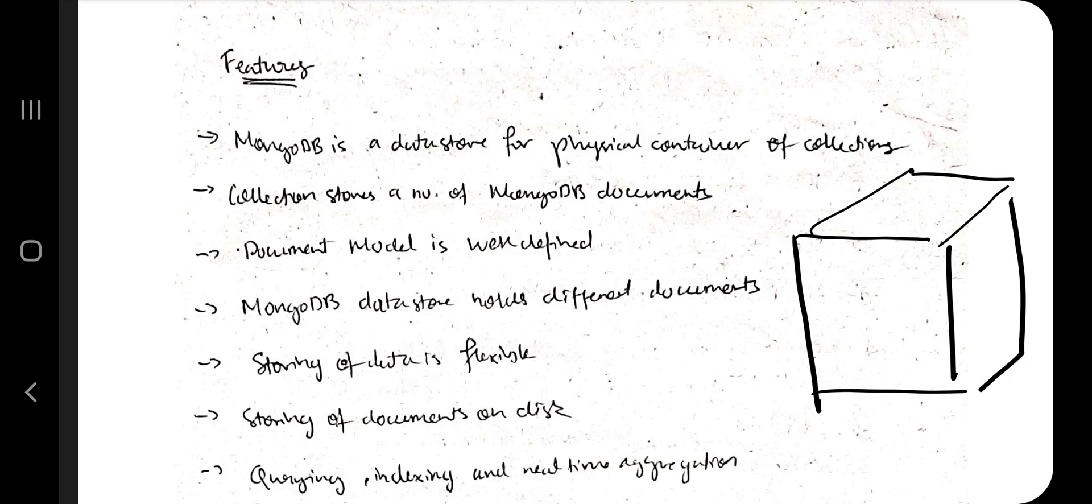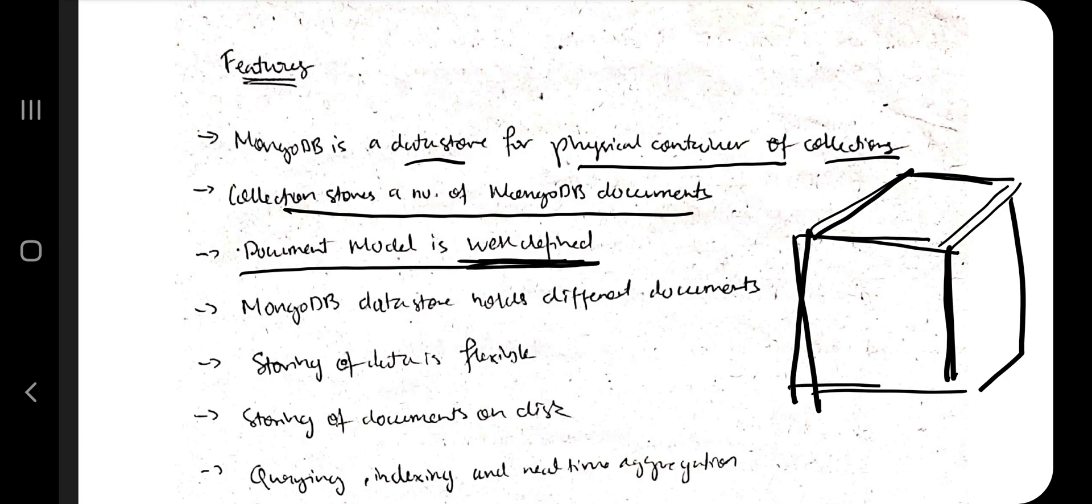You can make it into an orange box also, like the shape of the box, but inside mango only will be there. How does it relate? MongoDB is a data store for physical container of collections. It stores a number of MongoDB documents - a large variety of mangoes. Document model is well defined, imported from USA means standard. MongoDB data store holds different documents - different color mangoes, so different documents.